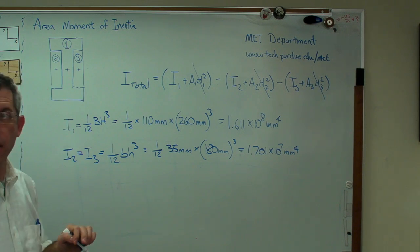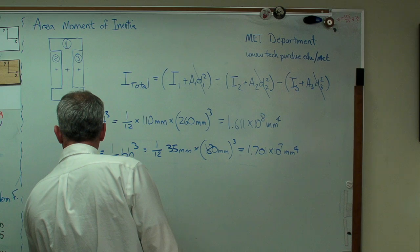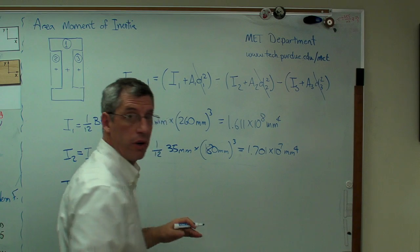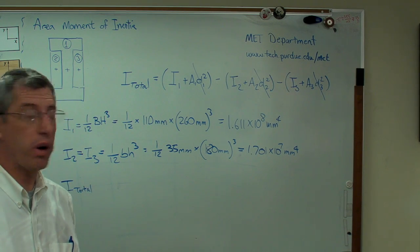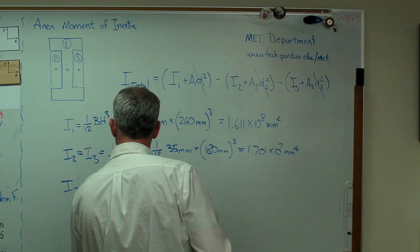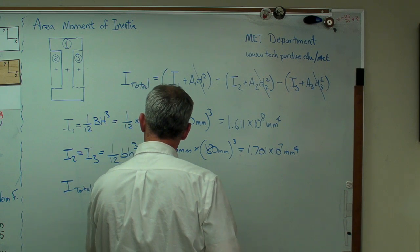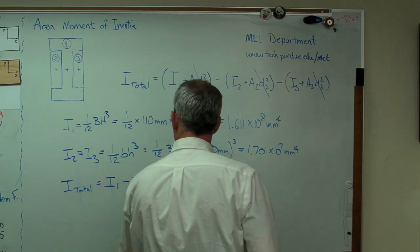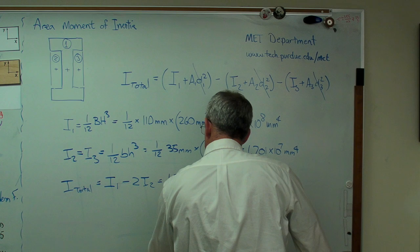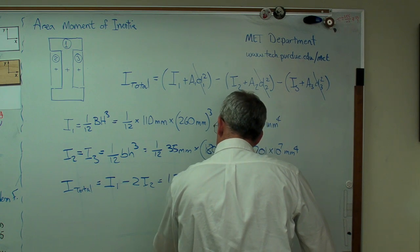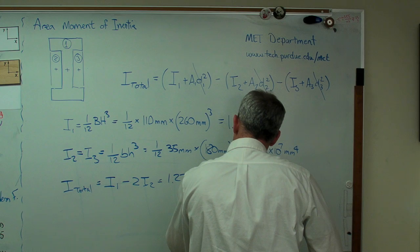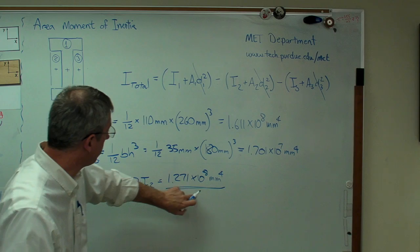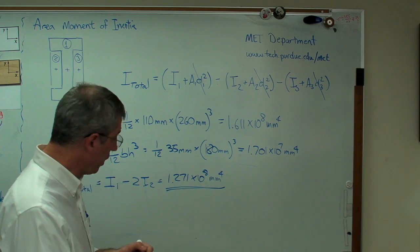There's two of these negative areas. So I total equals I1 minus 2 times I2. I2 and I3 are the same, so it doesn't really matter which one I pick. If you do that, you get 1.271 times 10 to the 8th millimeters to the 4th. That's the area moment of inertia of that I-beam. We know this is the answer.